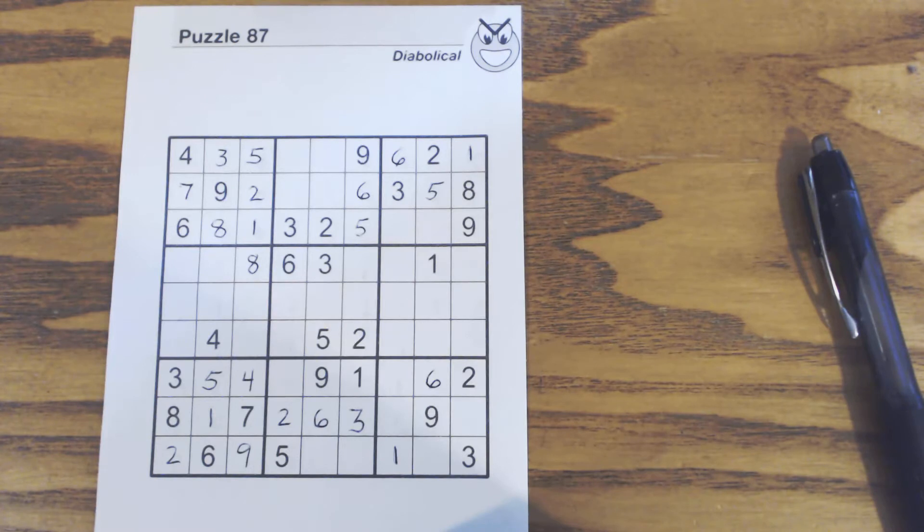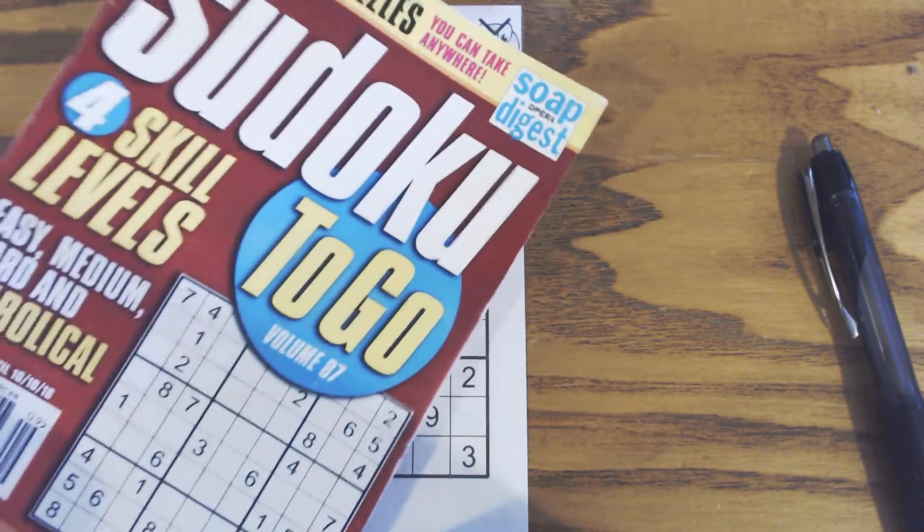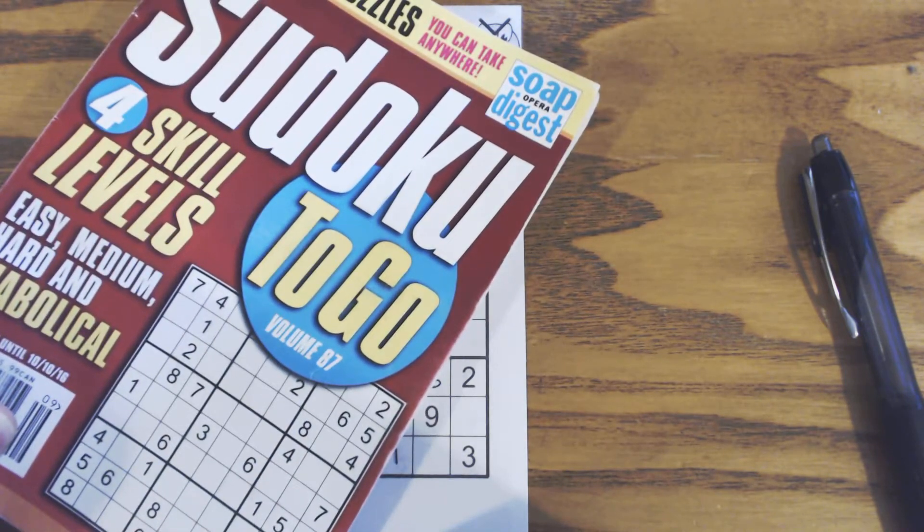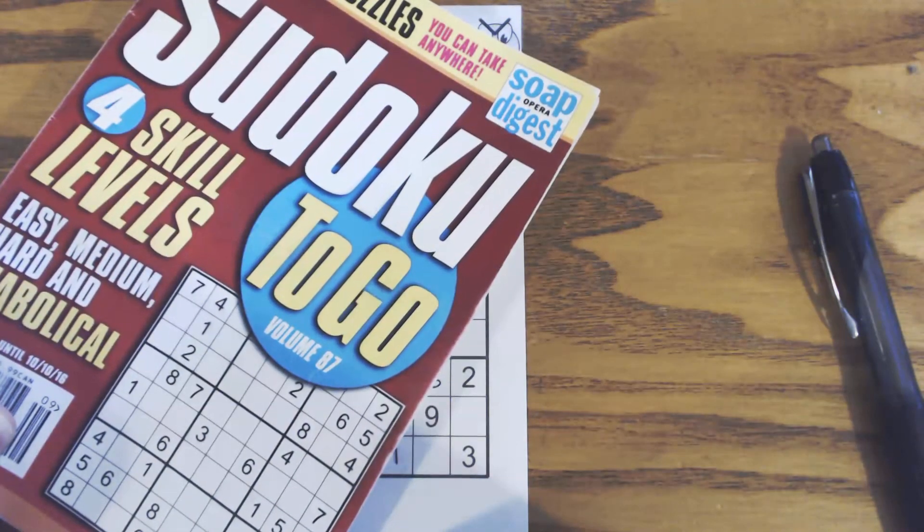It's a diabolical puzzle, which is the hardest level in this book. It's from Sudoku2Go volume 87 by Soap Upper Digest.